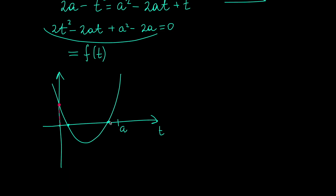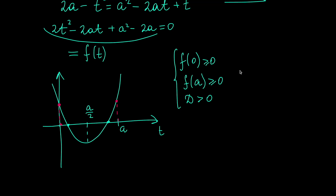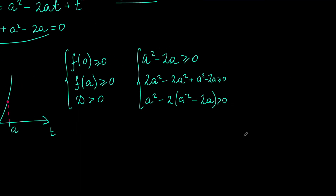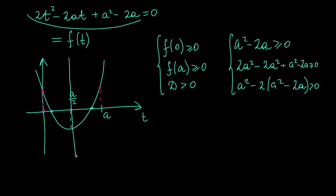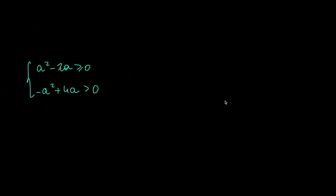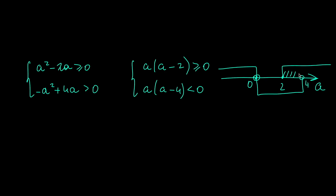Let's consider the left-hand side as a quadratic function f(t) and sketch its parabola. We want its intersections with the t-axis to be between 0 and A. This requires: f(0) ≥ 0, f(A) ≥ 0, and the discriminant > 0. The vertex of the parabola is at t = A/2, so f(0) and f(A) turn out to be equivalent. Solving the resulting system of inequalities, we find the answer is A ∈ (2, 4) — actually A ∈ [2, 4) — the same answer as in the first solution.